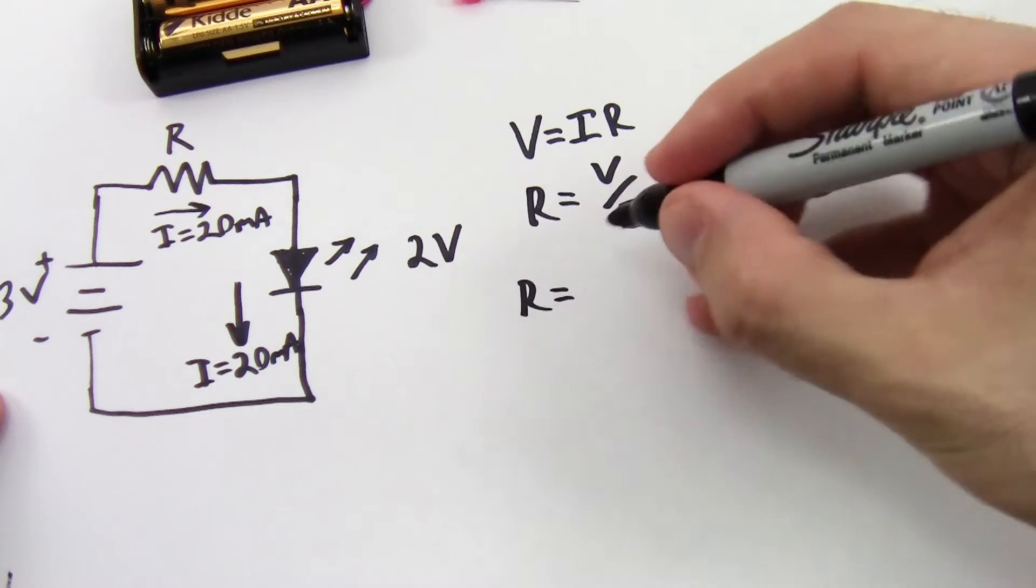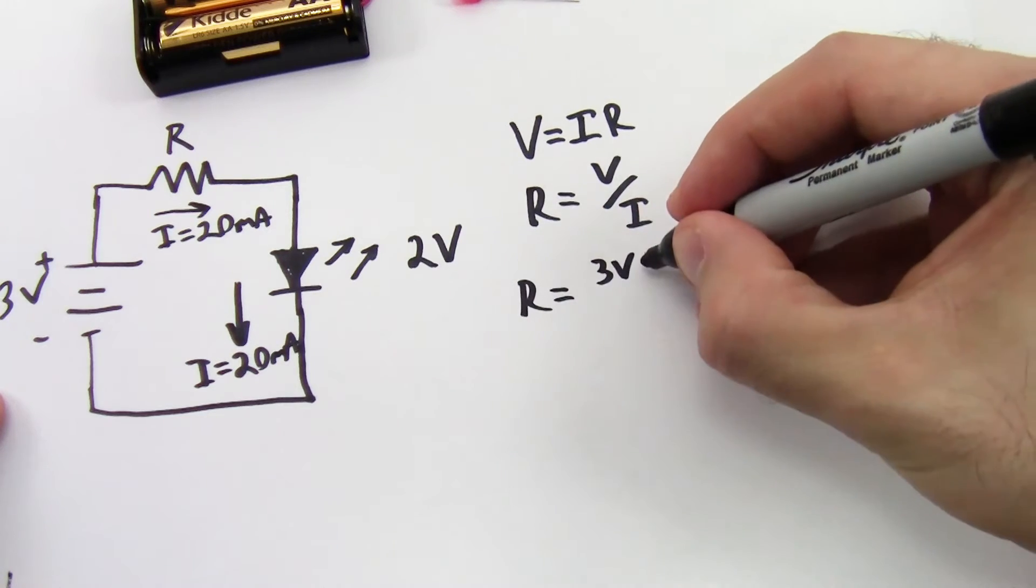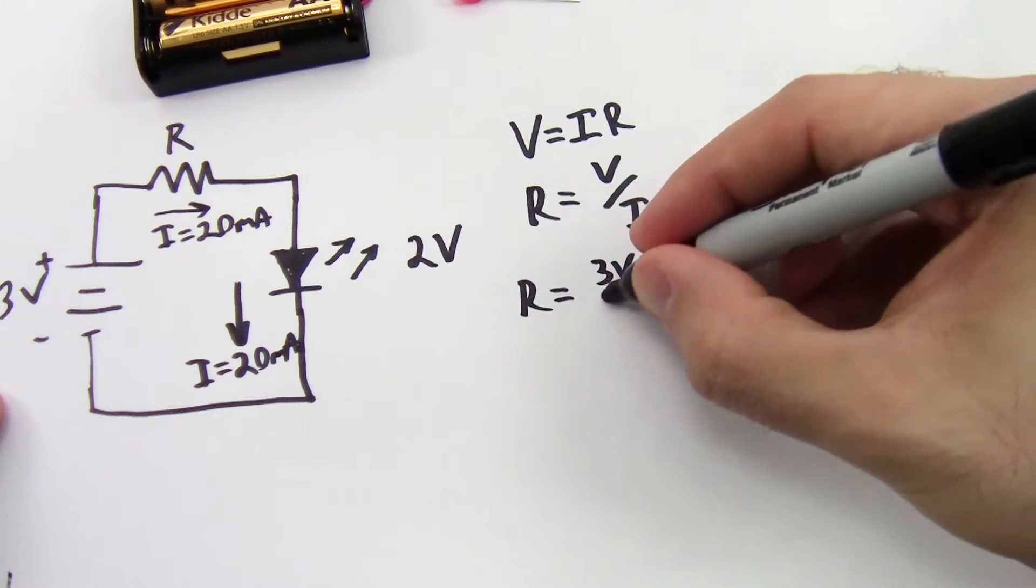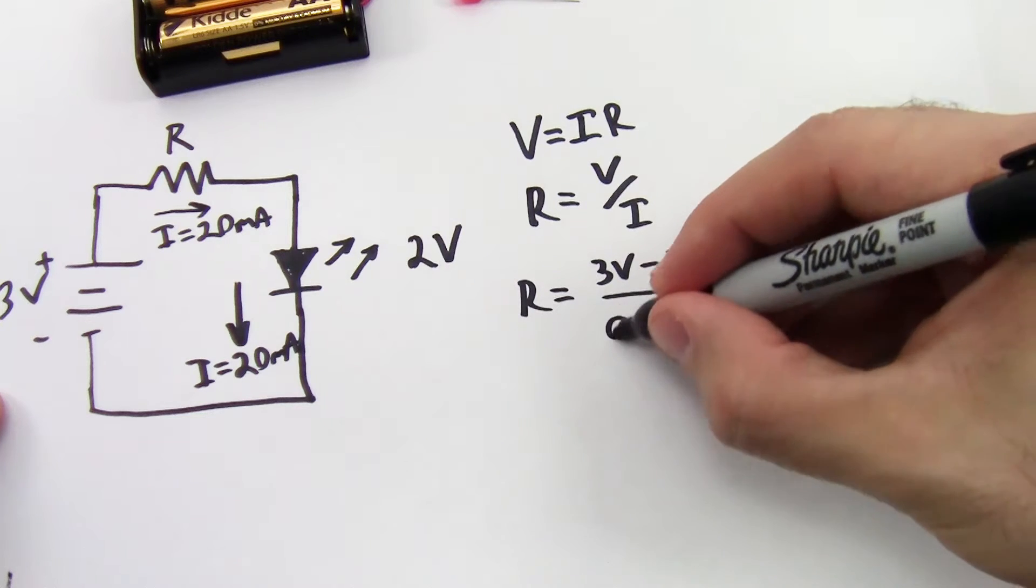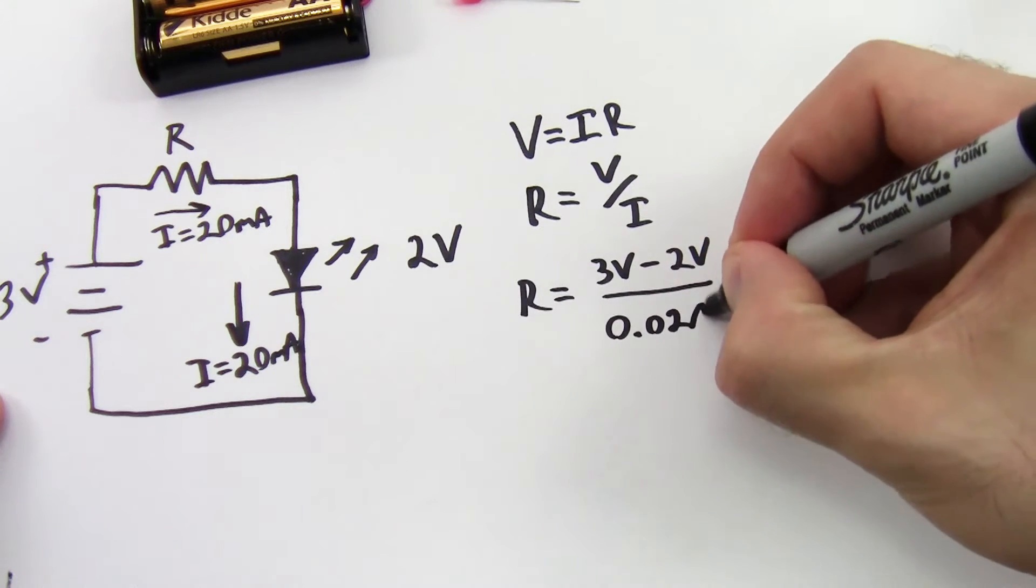So in this case, that voltage drop is going to be 3 volts minus 2 volts over my current, which is 20 milliamps or 0.02 amps.